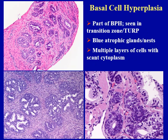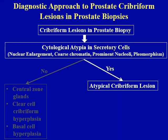Basal cell hyperplasia is also part of BPH, so it is seen in the transition zone and transurethral resection specimens. At low power, you can see this nodular proliferation of blue atrophic glands and nests. They can form several different architectural patterns, including a small glandular pattern which may be mistaken for prostate cancer, and sometimes you can also see cribriform architecture as well. At high power, the glands in basal cell hyperplasia are composed of multiple layers of cells with basal-looking or scant cytoplasm.